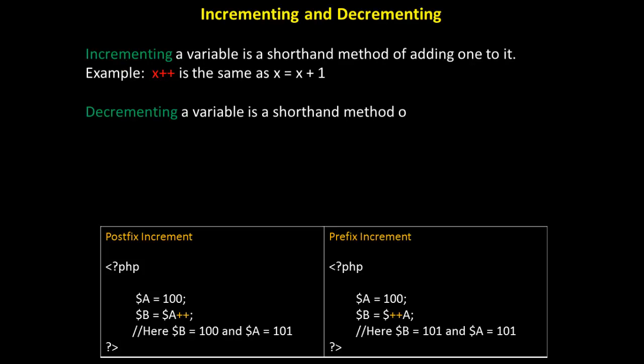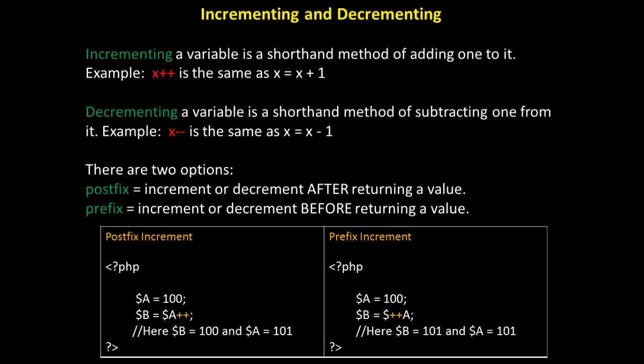Since we're discussing ternary expressions, why don't we also review incrementing and decrementing. Incrementing a variable is a shorthand method of adding one to it. For example, x plus plus is the same as saying x is equal to x plus one. Decrementing a variable is a shorthand method of subtracting one from it. For example, x minus minus is the same as saying x is equal to x minus one. There are two options: postfix to increment or decrement after returning a value, and prefix to increment or decrement before returning a value.